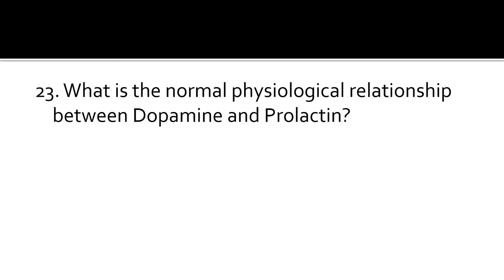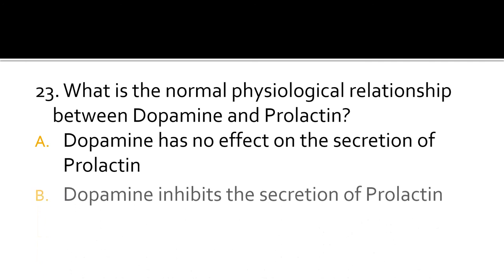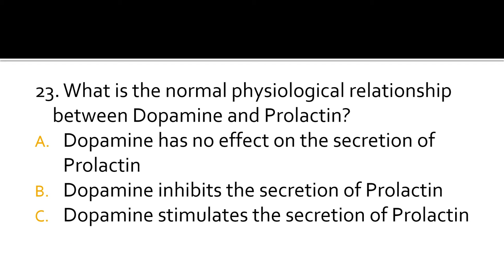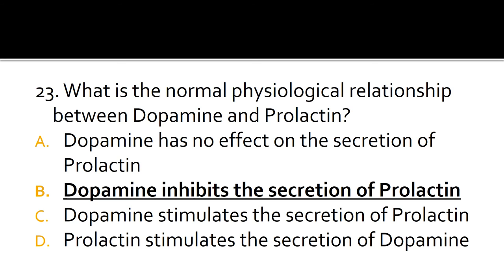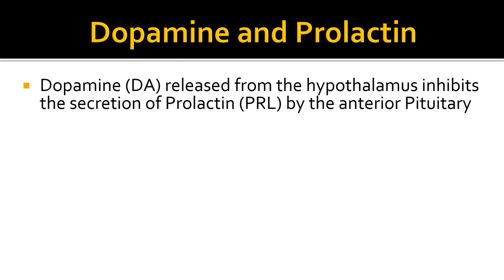Question 23. What is the normal physiological relationship between dopamine and prolactin? Dopamine has no effect on the secretion of prolactin. Dopamine inhibits the secretion of prolactin. Dopamine stimulates the secretion of prolactin. Prolactin stimulates the secretion of dopamine. The correct answer is B: dopamine inhibits the secretion of prolactin by the anterior pituitary.